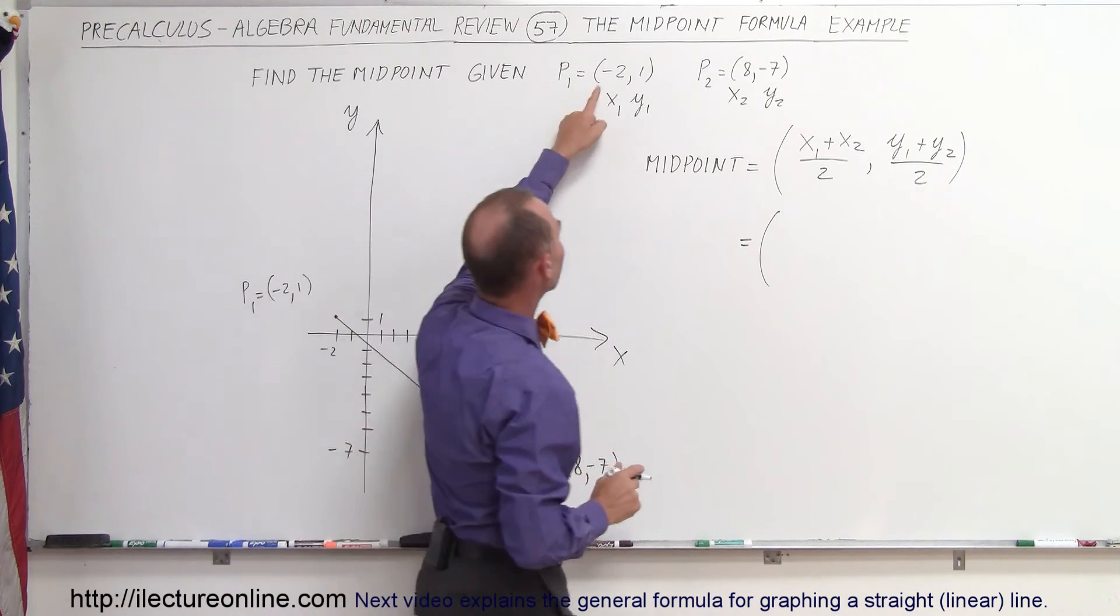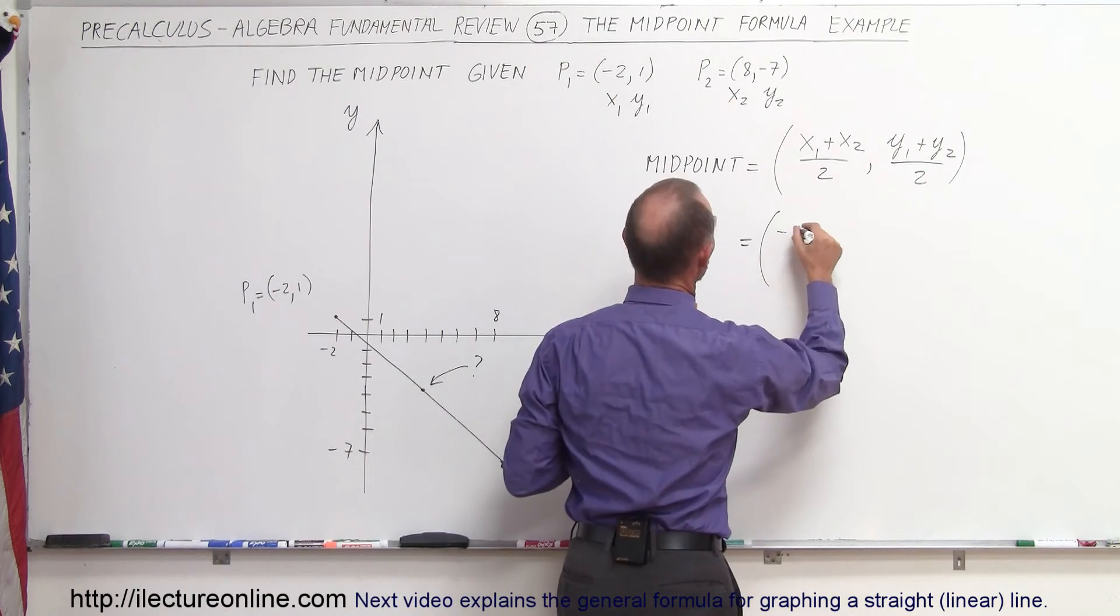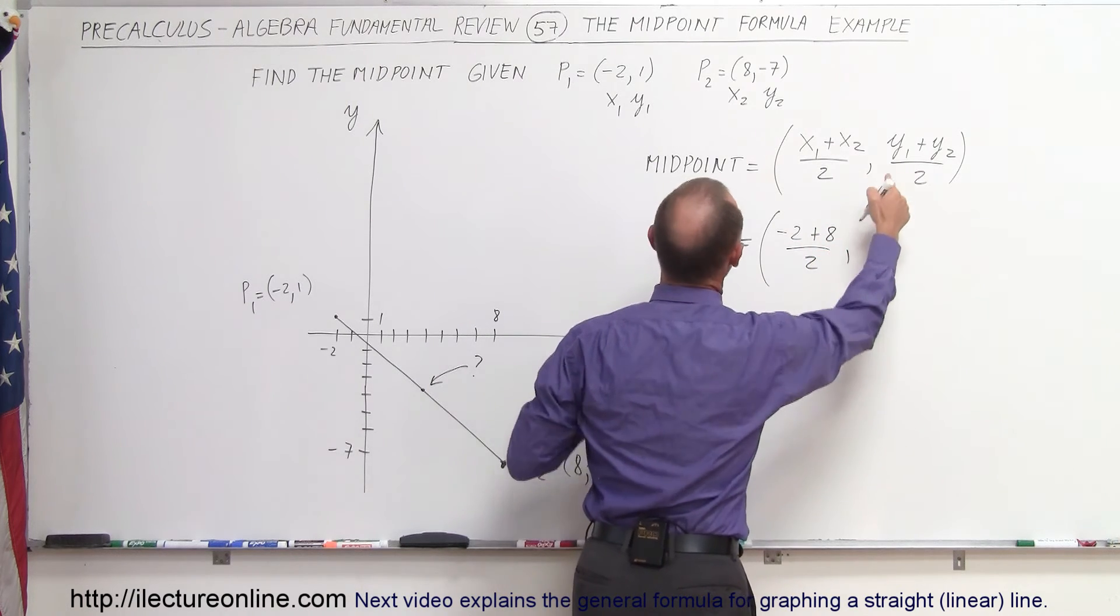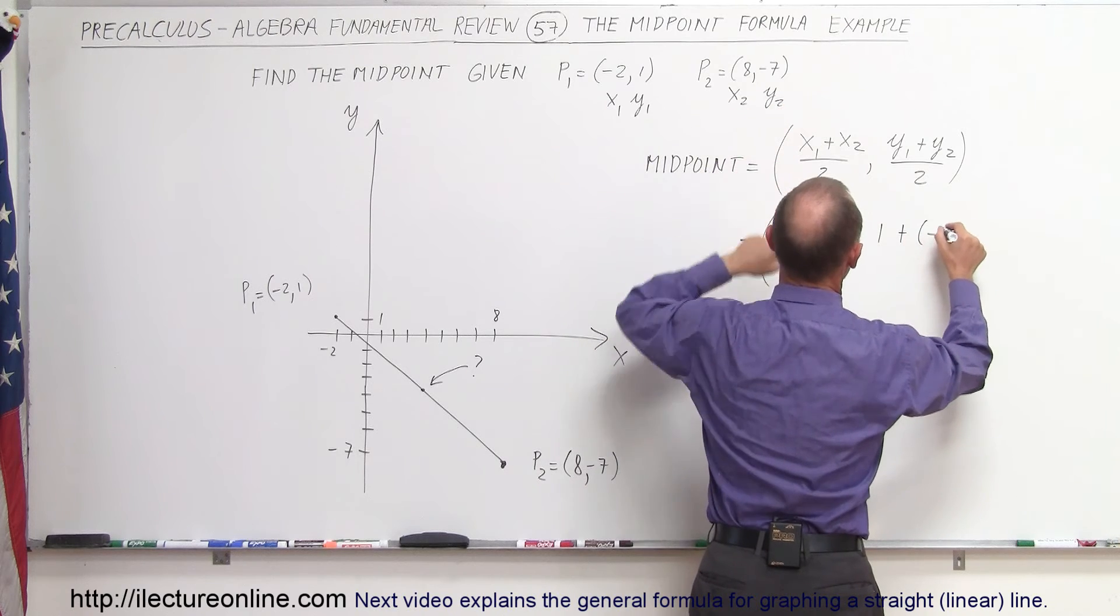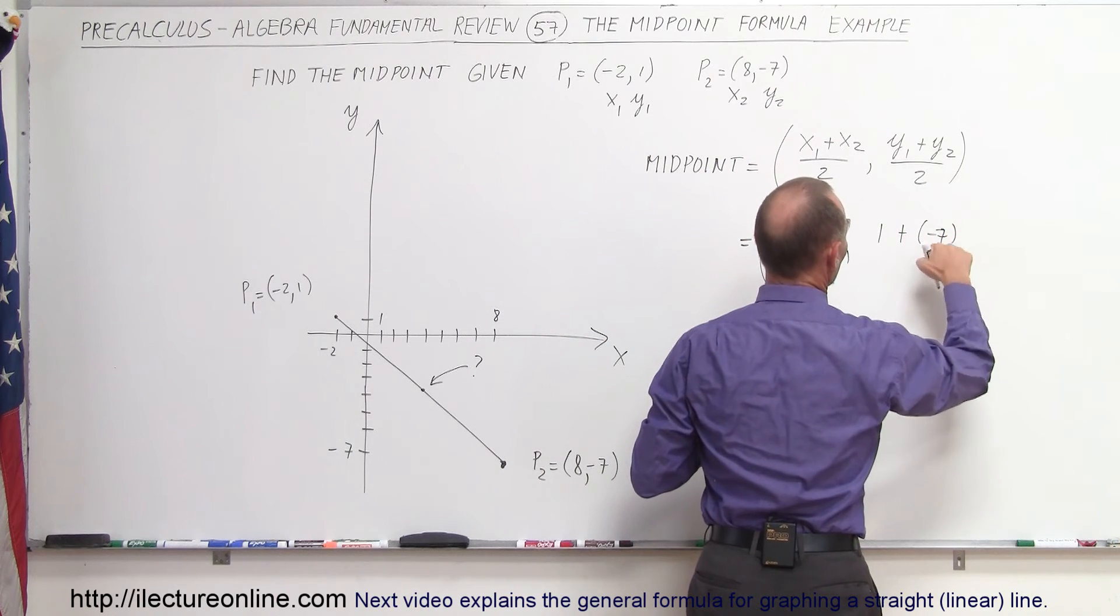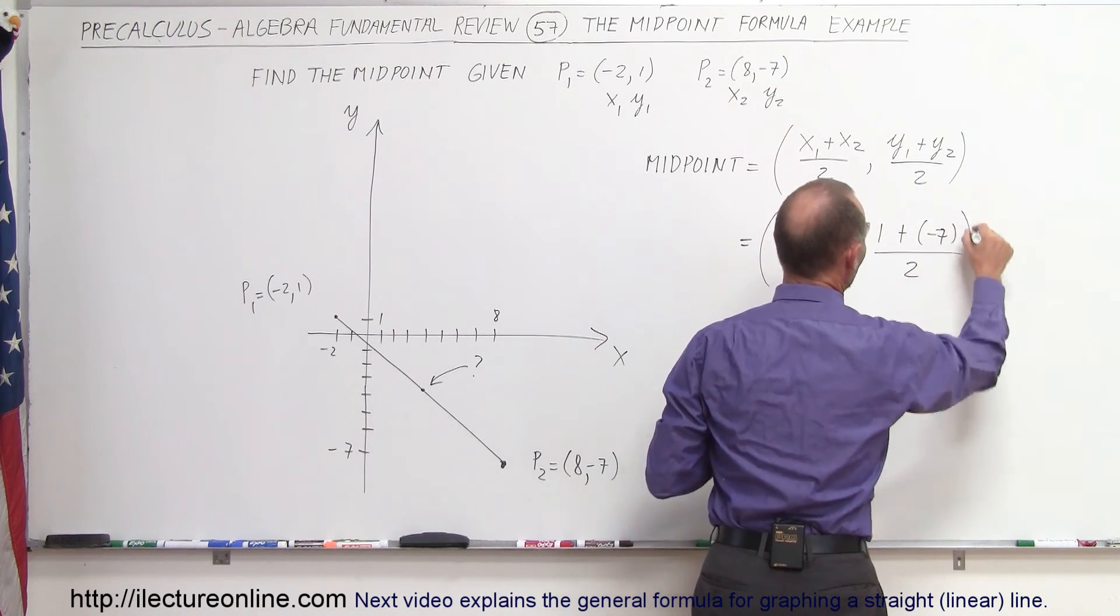Alright, so we're going to add the x values together: minus 2 plus 8, divided by 2. And the y values, we get 1 plus negative 7, divided by 2. We like to use parentheses to avoid making mistakes.